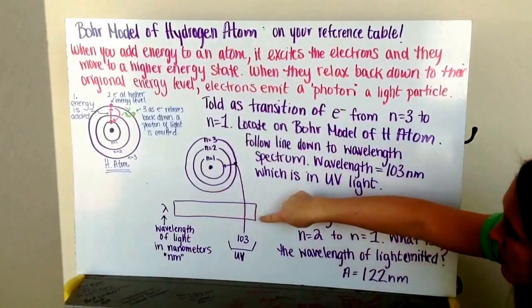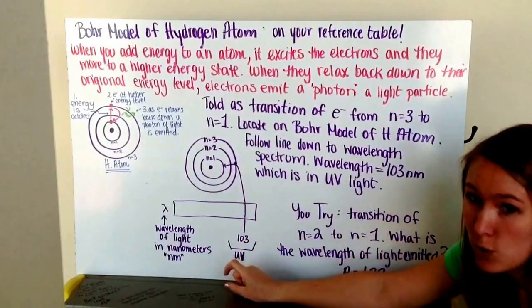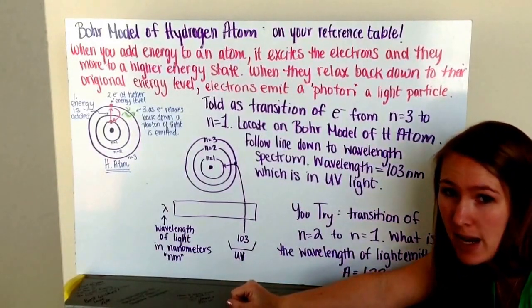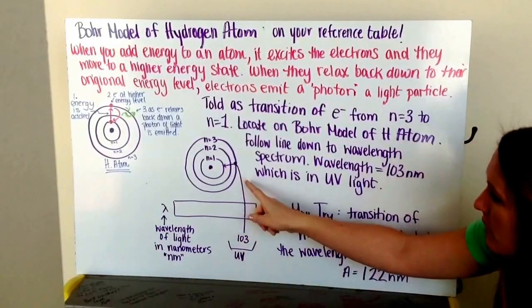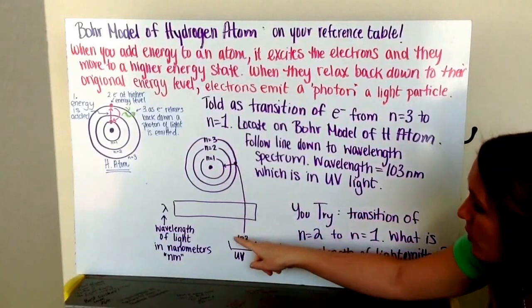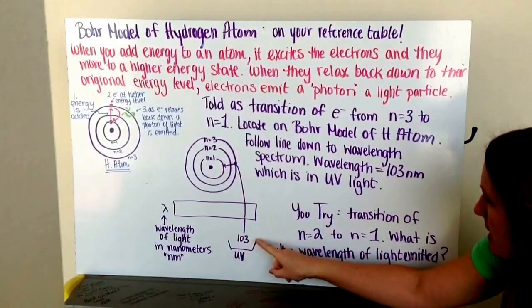Now, these wavelengths of lights are in nanometers, which we know there's one times ten to the ninth nanometers in a meter. And for this transition, we see that it has a wavelength of light of one hundred and three nanometers.